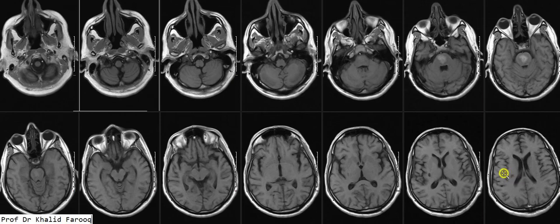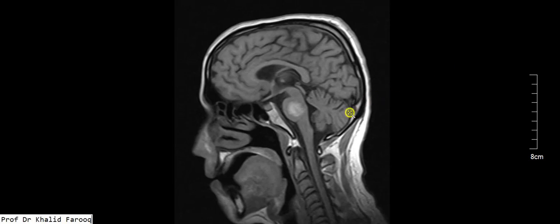In the right periventricular region extending down with involvement of the posterior portion of the right basal ganglia, suggesting old ischemic changes in this region. This can be confirmed on the sagittal T1-weighted sequence, where we can see hemorrhage in the pons.